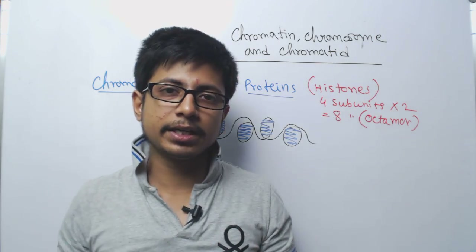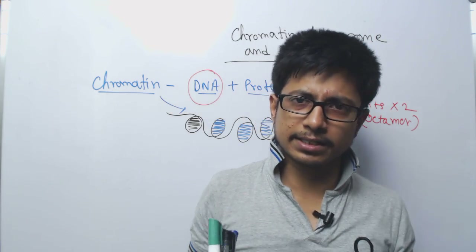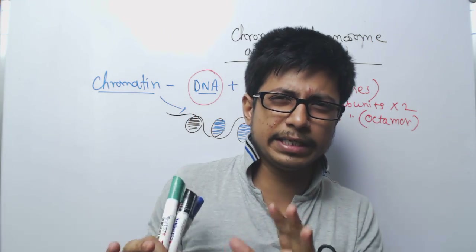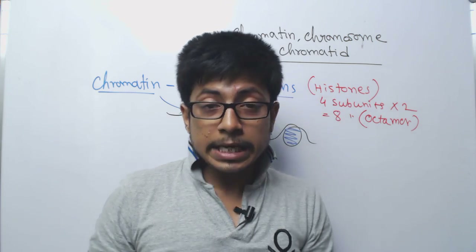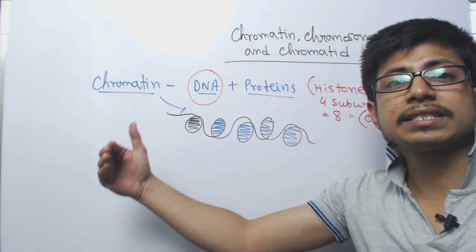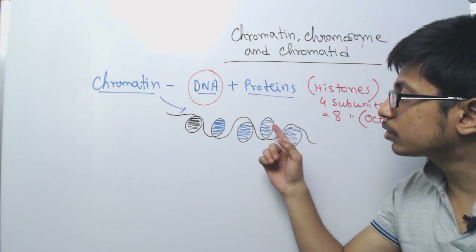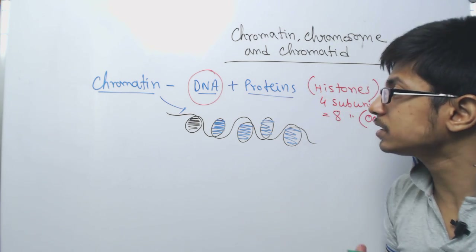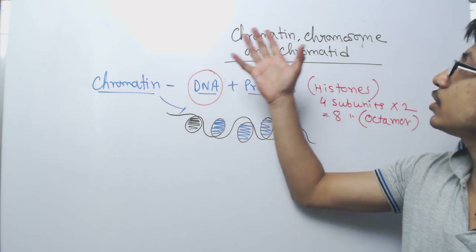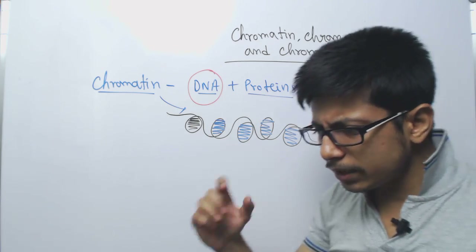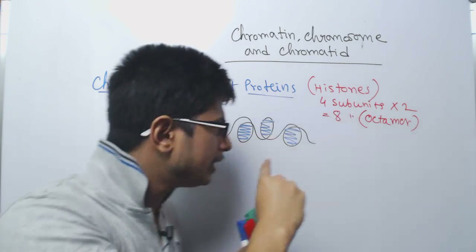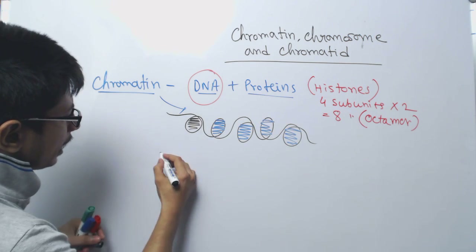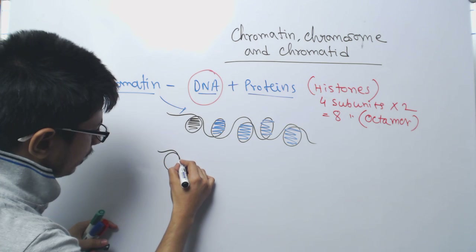Chromatin is the structure of DNA as it exists throughout the normal life of the cell — we cannot easily visualize chromatin under a microscope normally. However, during cell division, this chromatin condenses further, and that further condensed form of chromatin is known as a chromosome. This beads-on-a-string model slowly starts to arrange itself in a much more complicated fashion.